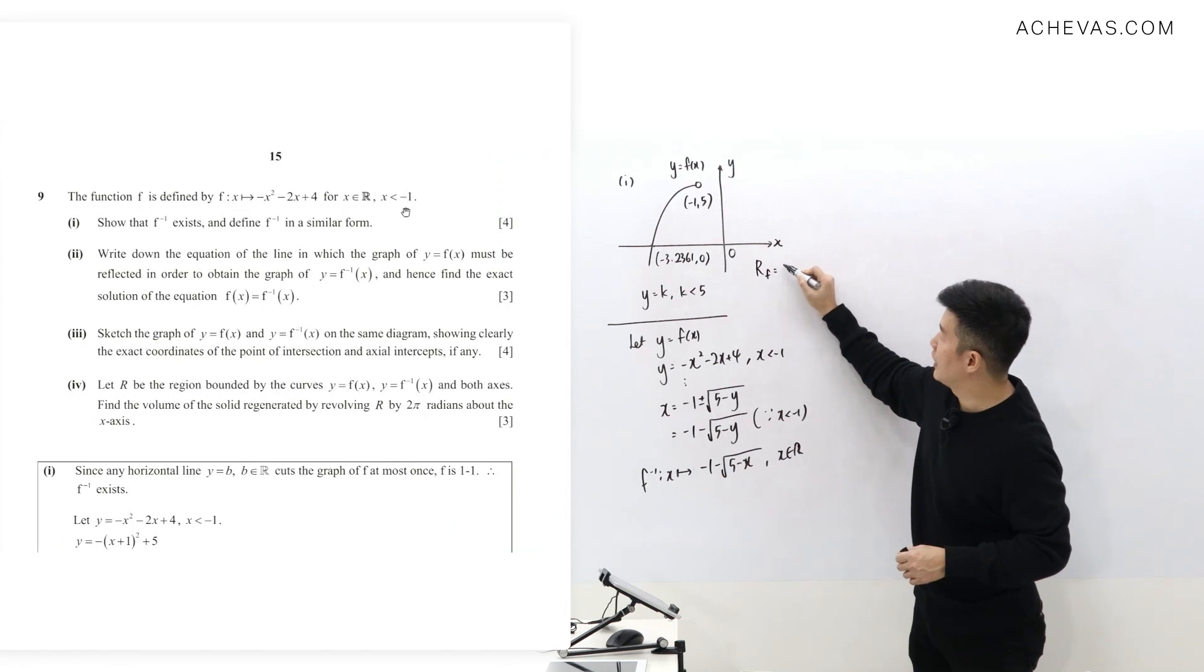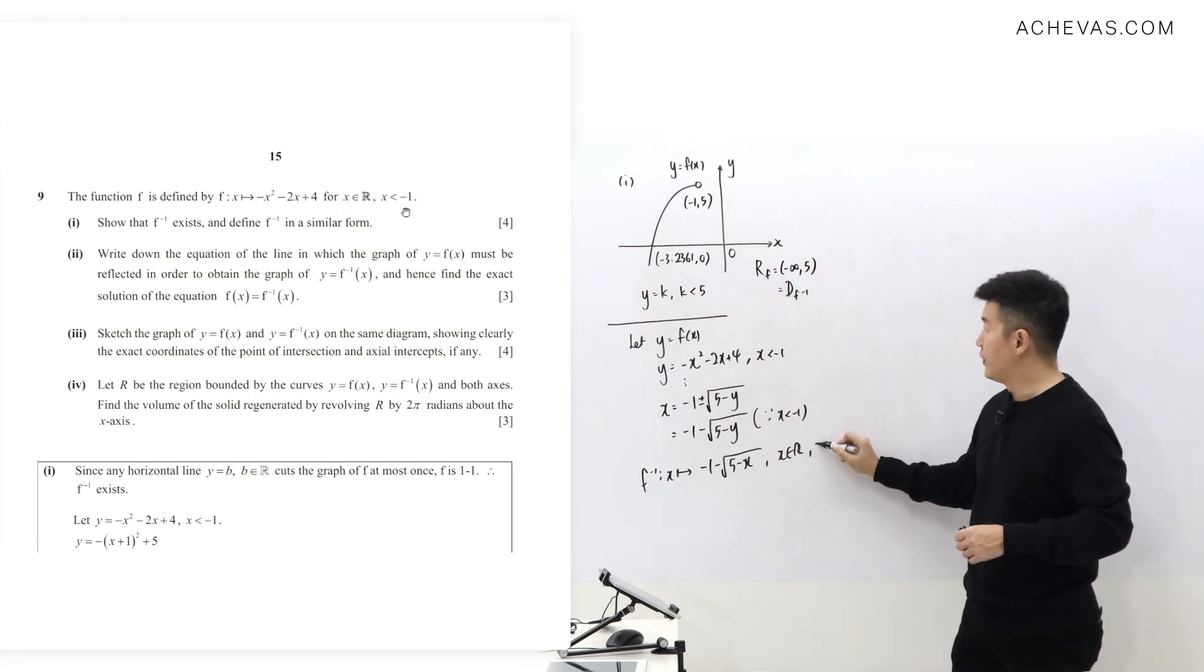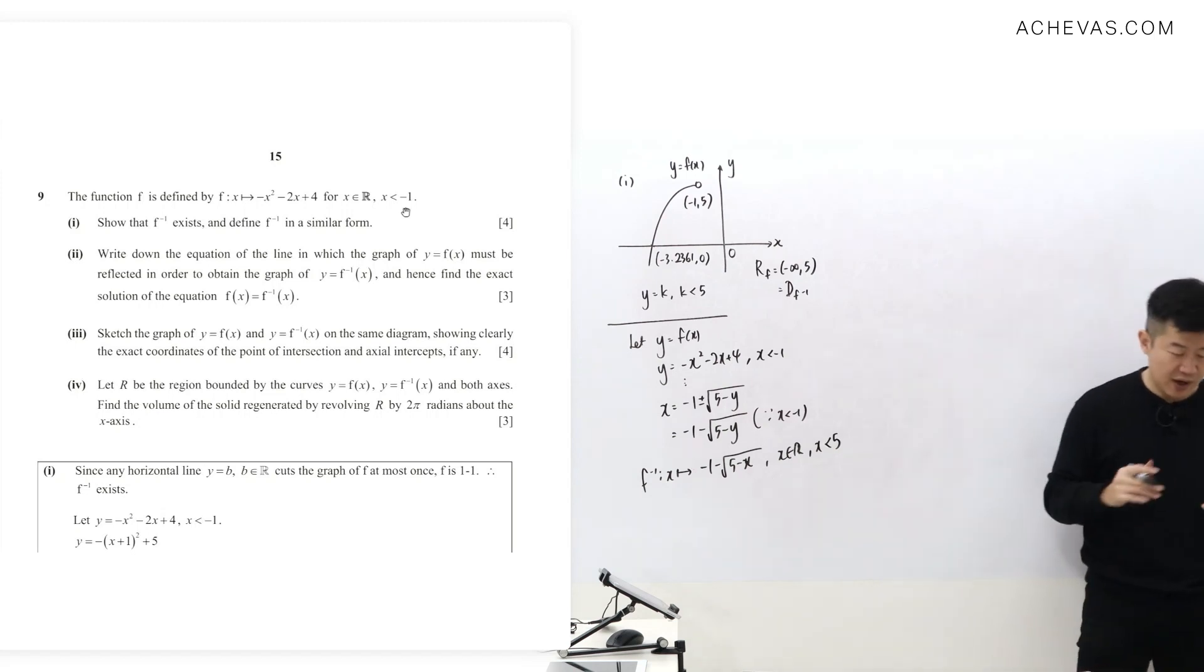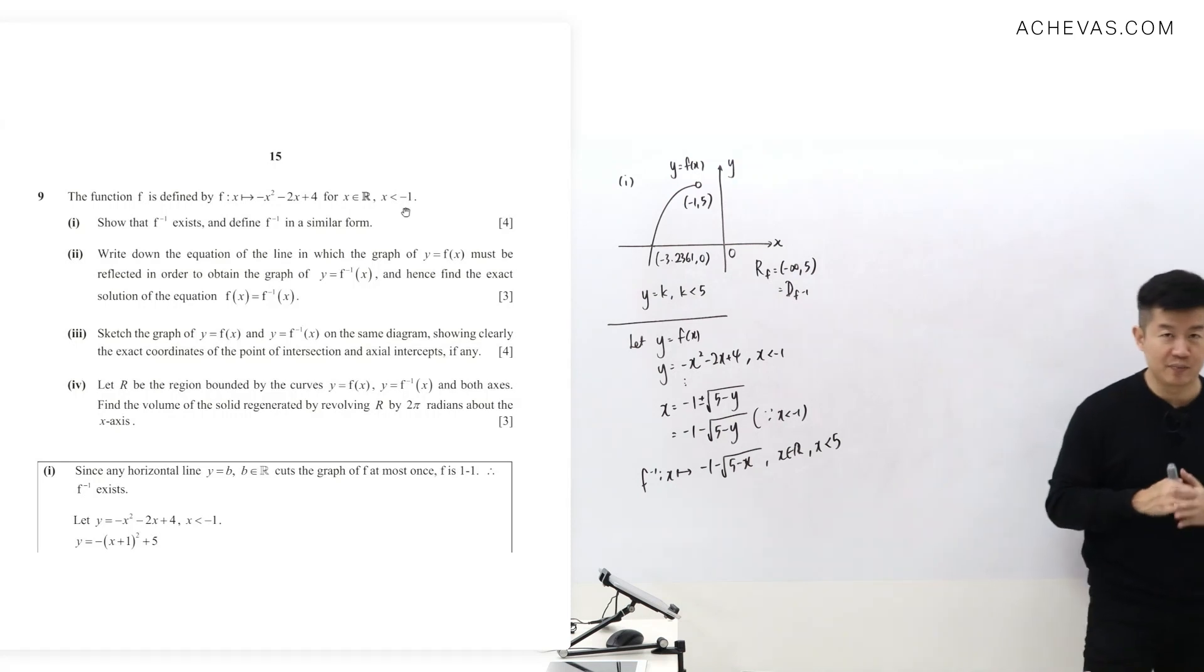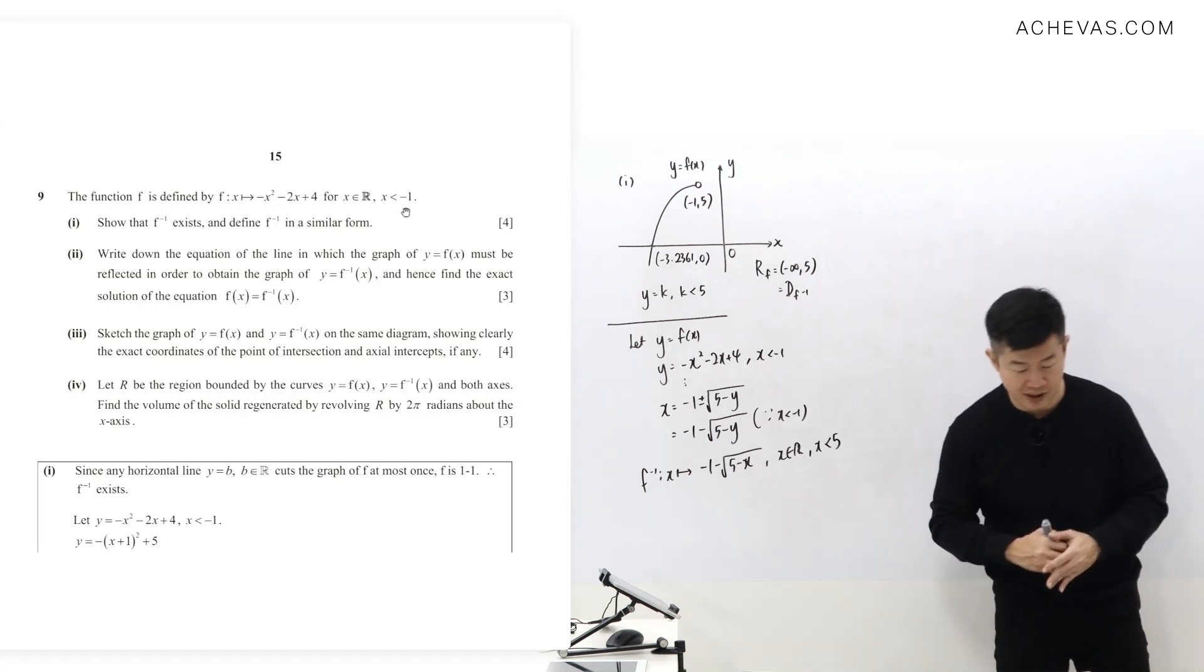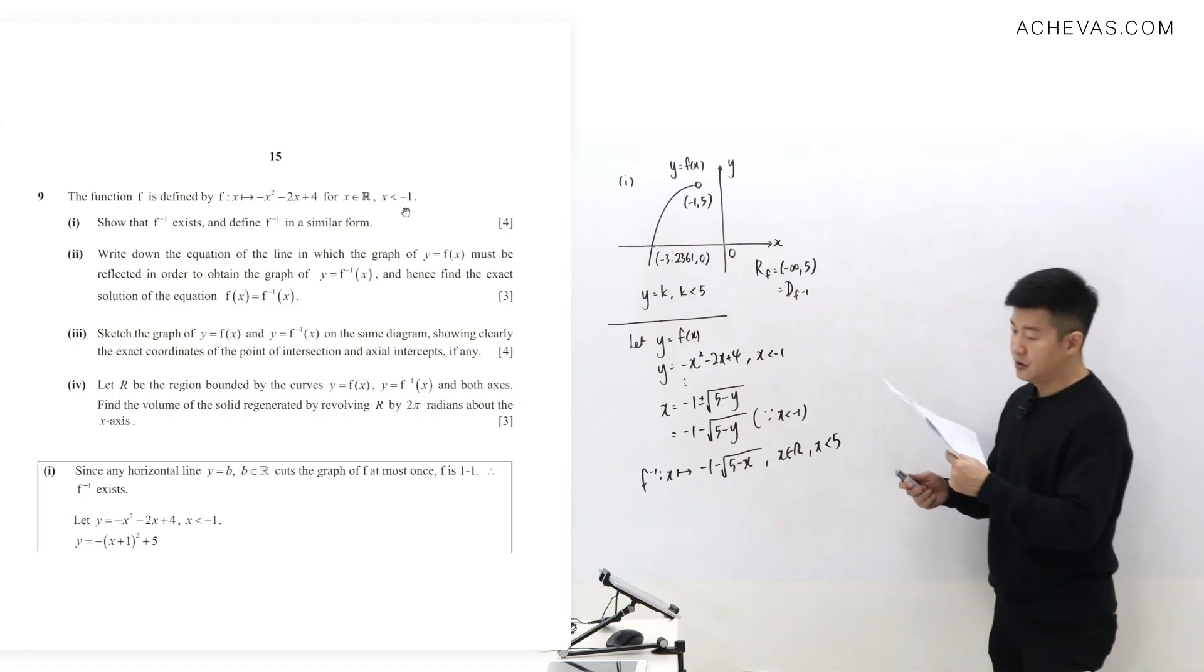From this I can see what is the range of f. The range of f is from minus infinity all the way until 5, and this is going to give me the domain of f inverse. So for this, x is supposed to be less than 5. Four marks is a giveaway. I think we can practice enough to secure these four marks way before this question even appears in the exam.